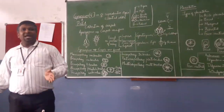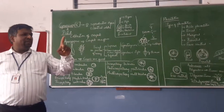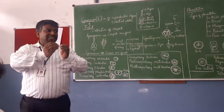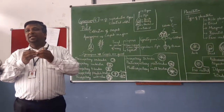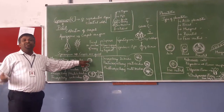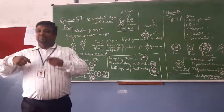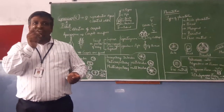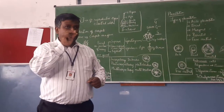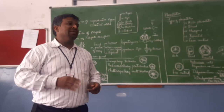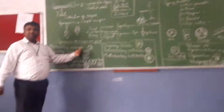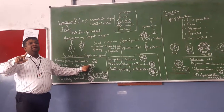Now, based on number of carpels and locules: the locule is the cavity of the ovary; the outer part is the carpel. Monocarpellary, monolocular (or unilocular) — you can see this in the 4 o'clock plant, Mirabilis jalapa. Bicarpellary unilocular — they have two carpels but there is no septum to separate them into two cavities. That condition also exists in plants — initially in case of mustard plant, they are bicarpellary unilocular.